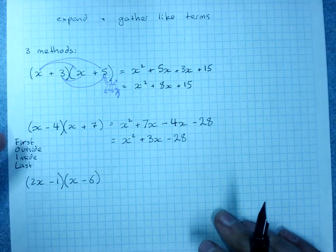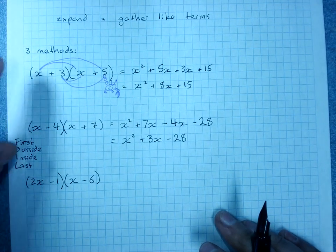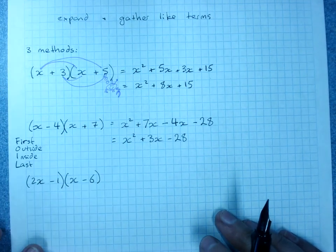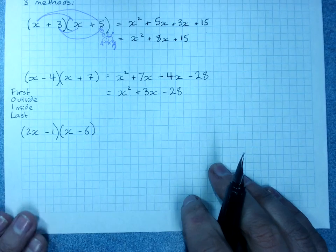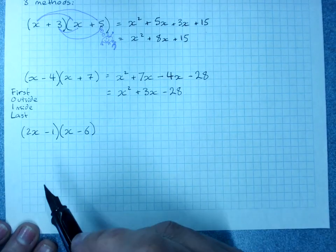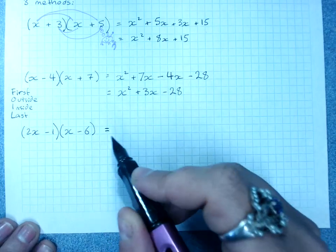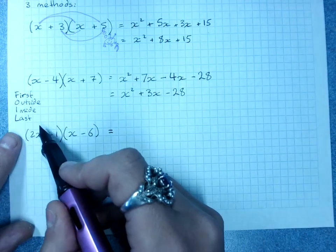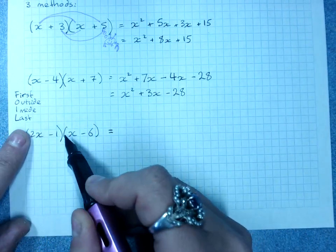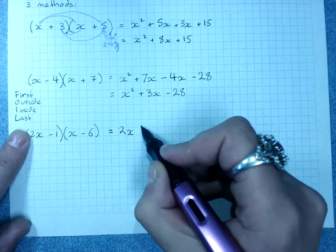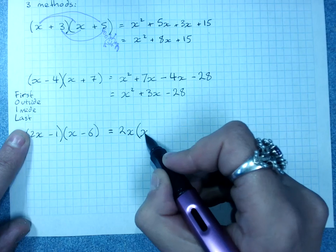It's effectively the same thing. Any of them are making sure that I multiply everything in the first bracket by everything in the second bracket. Four separate multiplications. The other option you can do is actually write it as two separate smaller expansions. I want to do 2x times x minus 6.